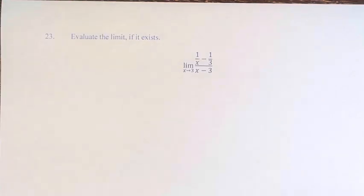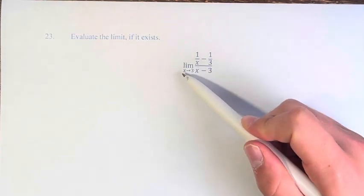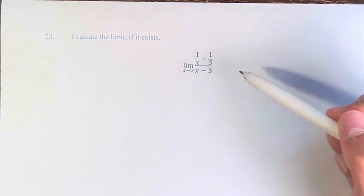Hello, and welcome back to another video. In this problem, we're asked to evaluate the limit if it exists, and we have the limit as x approaches 3 of 1 over x minus 1 over 3, divided by x minus 3.